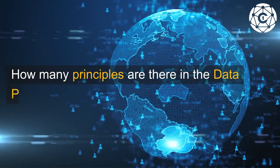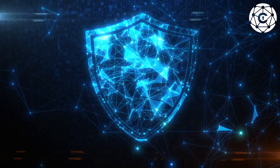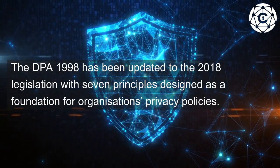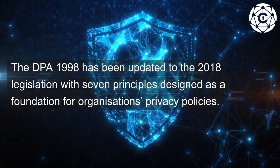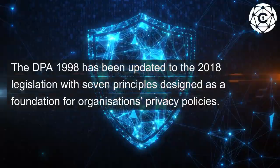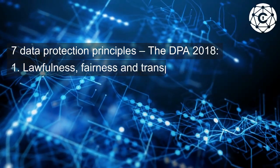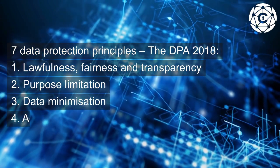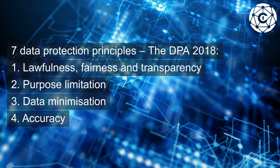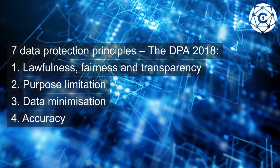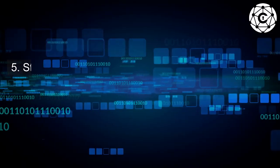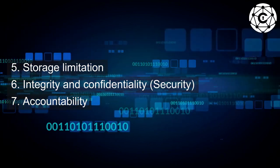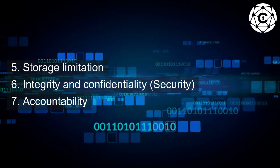How many principles are there in the Data Protection Act 2018? The DPA 1998 has been updated to the 2018 legislation with seven principles designed as a foundation for organizations' privacy policies. The seven data protection principles of DPA 2018 are: 1. Lawfulness, Fairness and Transparency. 2. Purpose Limitation. 3. Data Minimization. 4. Accuracy. 5. Storage Limitation. 6. Integrity and Confidentiality, Security. 7. Accountability.